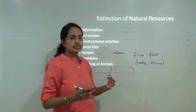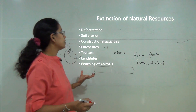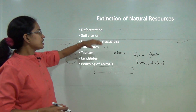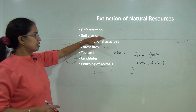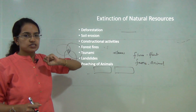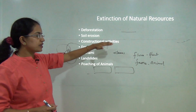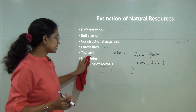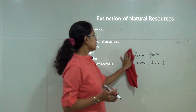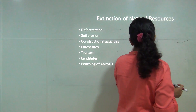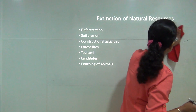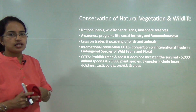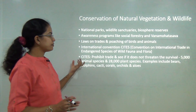Natural resources are becoming extinct rapidly. Major reasons include deforestation, soil erosion removing fertile topsoil, construction activities, forest fires, natural disasters like tsunamis and earthquakes, and human factors such as poaching and illegal hunting in forest and protected areas.